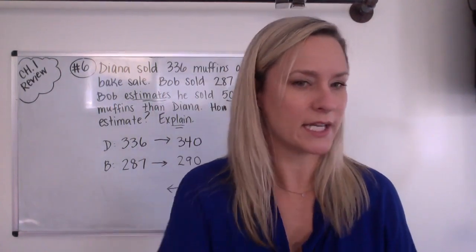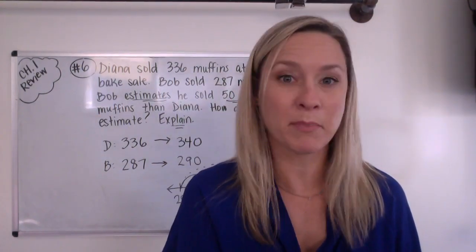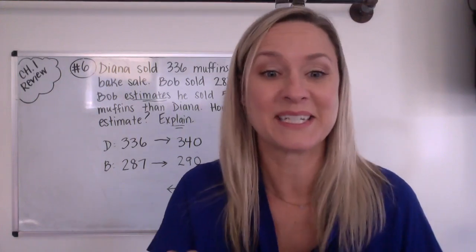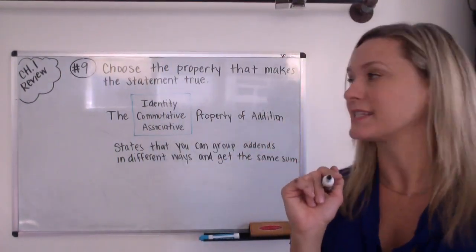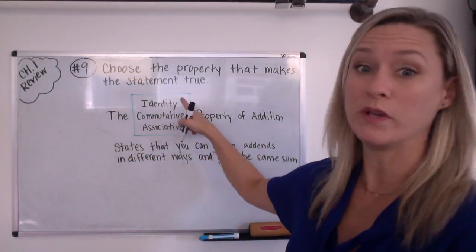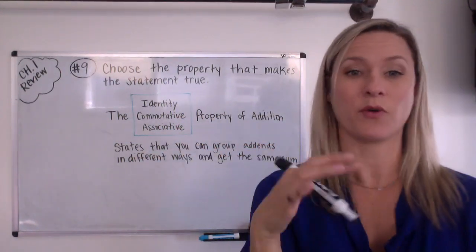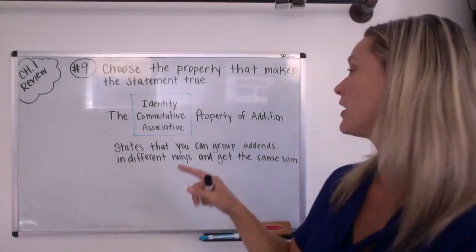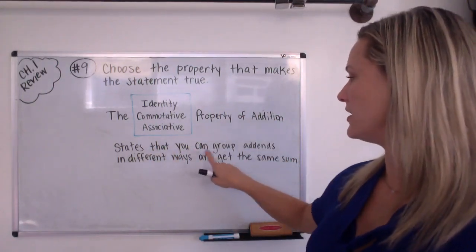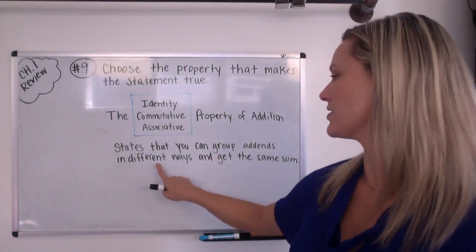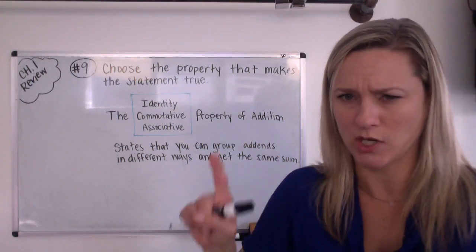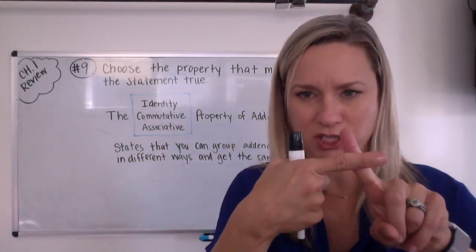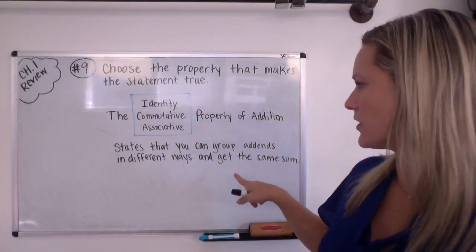Okay. Are you ready for the next one? It is number nine. Okay. Get ready for number nine. Back. It's number nine. Are you ready for this one? Okay. Choose the property that makes the statement true. We've got to choose one of those. So the identity, commutative or associative property of addition states that you can group add-ins in different ways and get the same sum. Okay. Remember, sum is the answer to an addition problem.